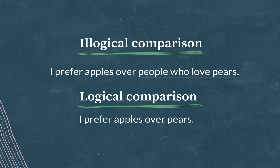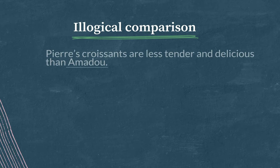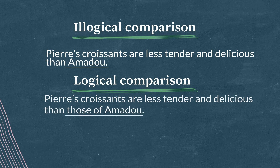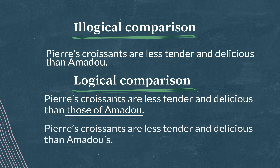You might need to add a word like 'that' or 'those' to correct an illogical comparison. For example: 'Pierre's croissants are less tender and delicious than Amadou.' This is illogical because Amadou is a person, not a pastry. We want to compare his pastries to Pierre's, so the corrected versions are: 'Pierre's croissants are less tender and delicious than those of Amadou,' or 'Pierre's croissants are less tender and delicious than Amadou's.'